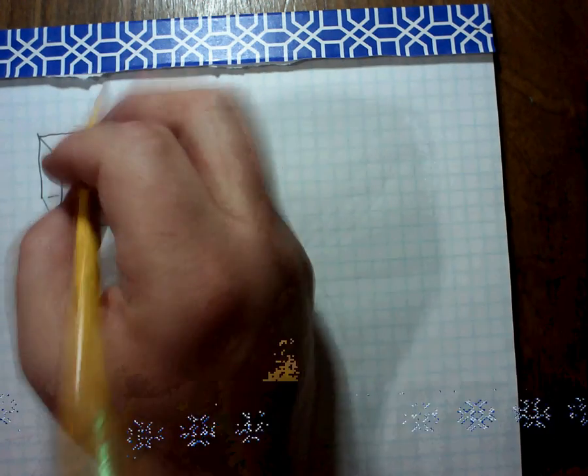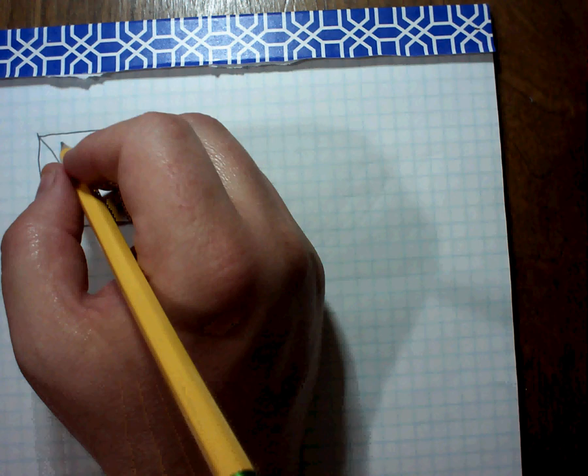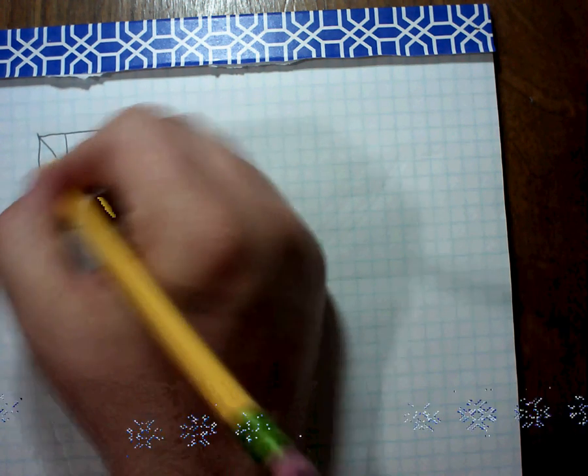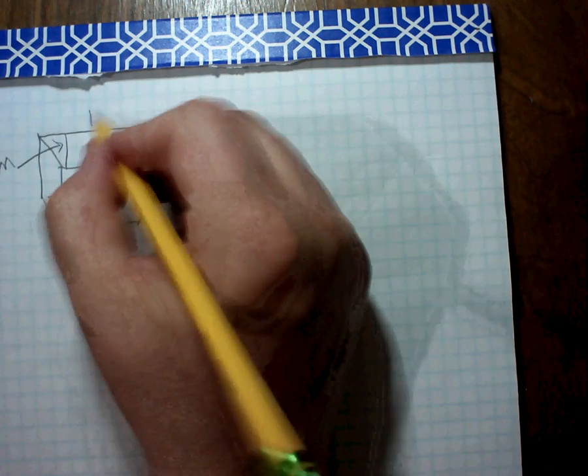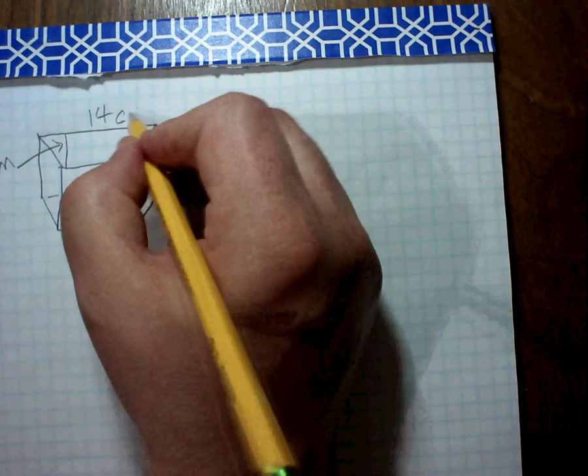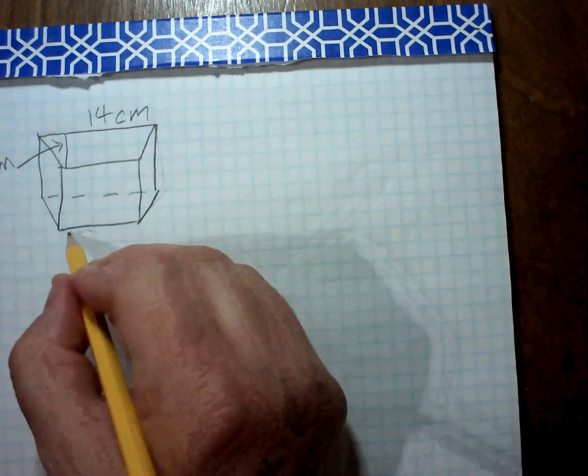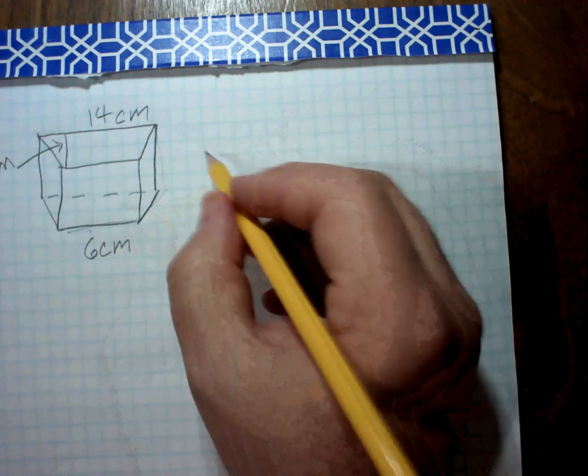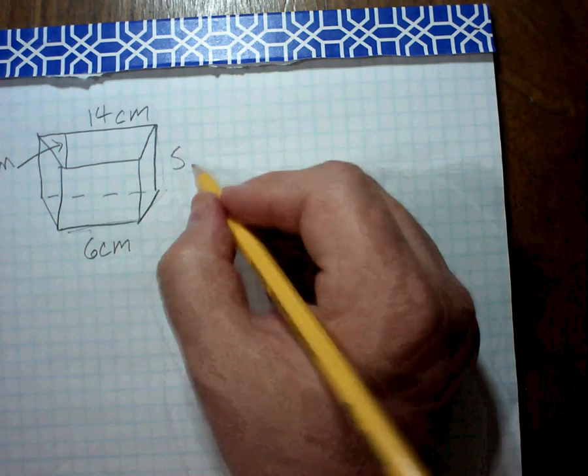And they give us some dimensions. They say that the height from here to here, that's 3 centimeters. And that this base here is 14 centimeters. That the length from here to here is 6 centimeters. And that the height of the prism is 5 centimeters.